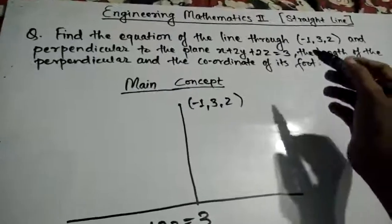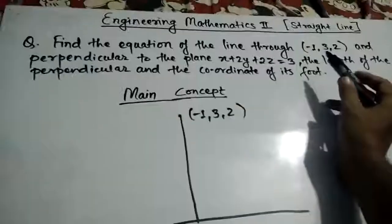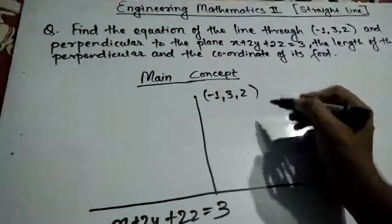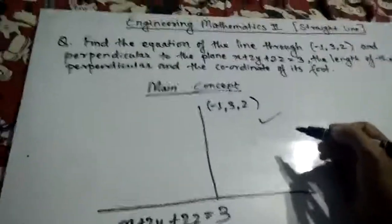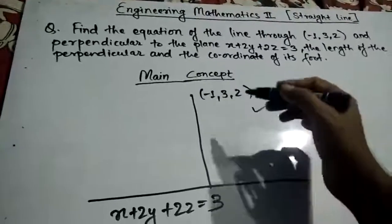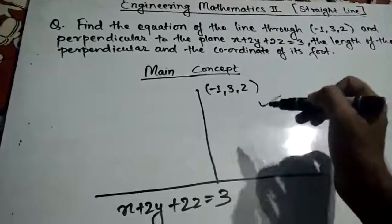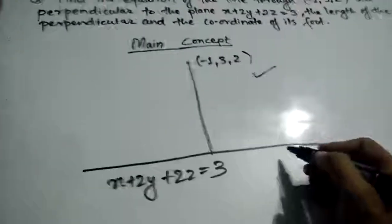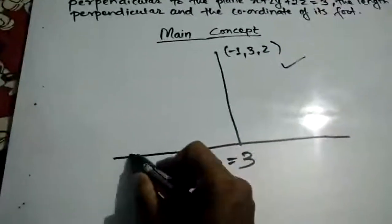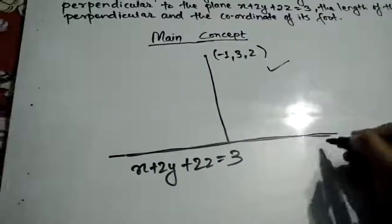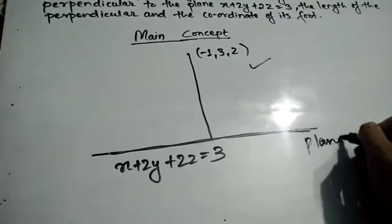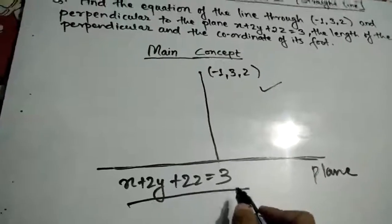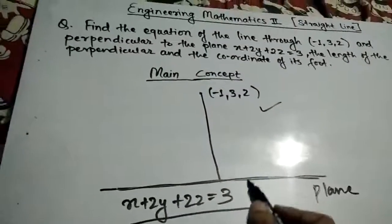First, a point (-1, 3, 2) is given — that point is this point here. The line containing this point is perpendicular to this plane. This is a plane, and it has equation x + 2y + 2z = 3.